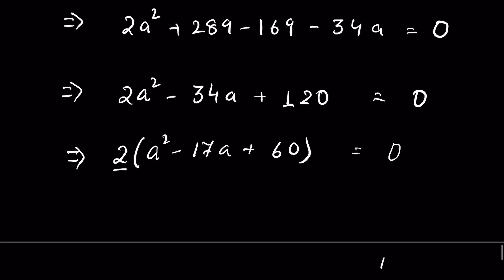a² - 17a + 60 = 0. Dividing both sides by 2, we get a² - 17a + 60 = 0.